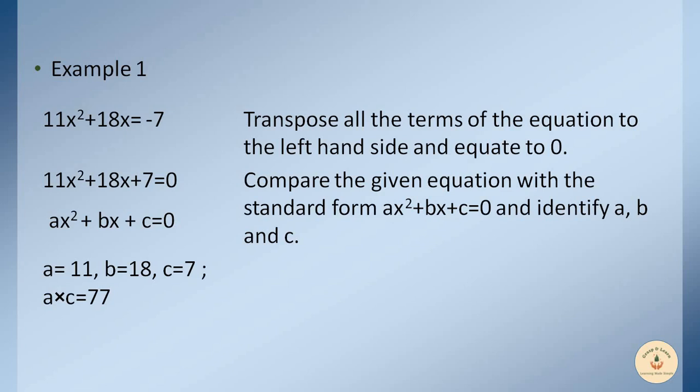Factorization is the method of splitting the middle term. The middle term is b, which is 18, and a×c is 77. We need to remember these two values to solve the equation further.